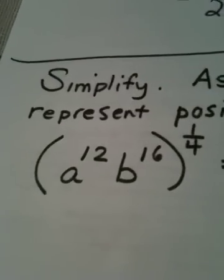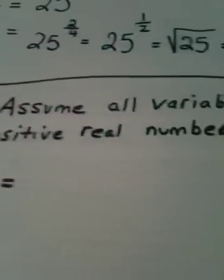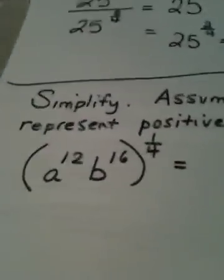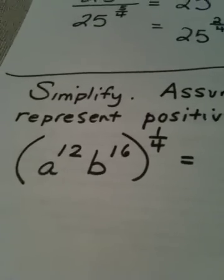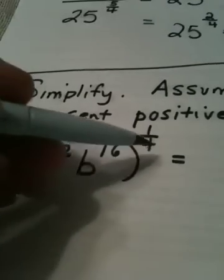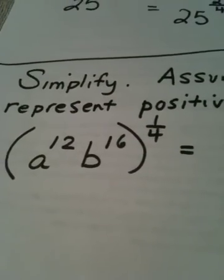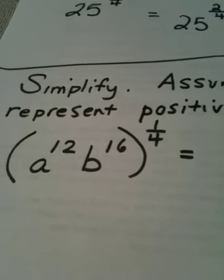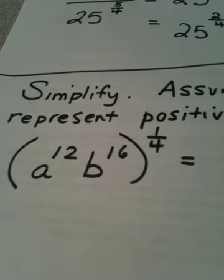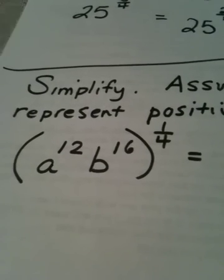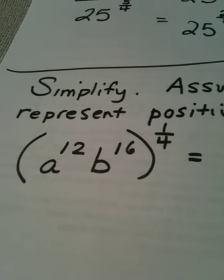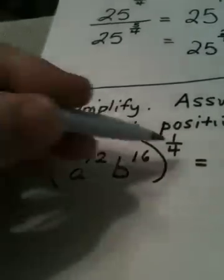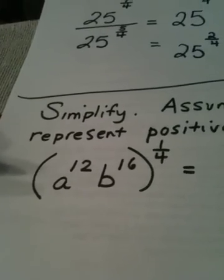The next problem asks us to simplify, and it tells us to assume that all variables represent positive real numbers. That's telling me one thing—that I don't have to worry about slapping on absolute value bars when the index is even, because if a variable is already positive, that means when I'm taking a square root, or a fourth root, or a sixth root, the answer is okay the way it comes out. I don't have to worry about getting a negative answer. There's one thing going on here, and it's one rule you need to remember.